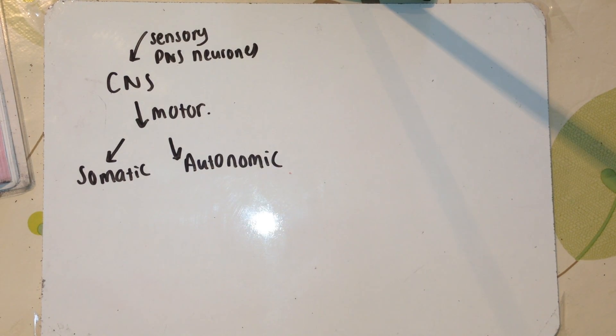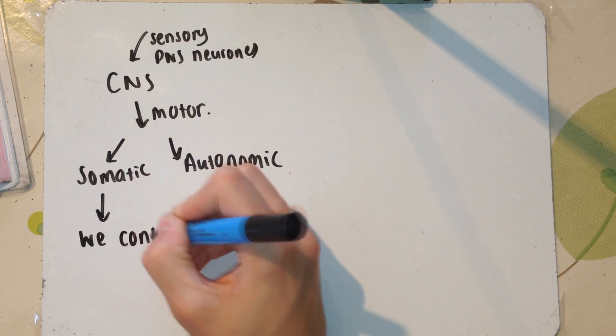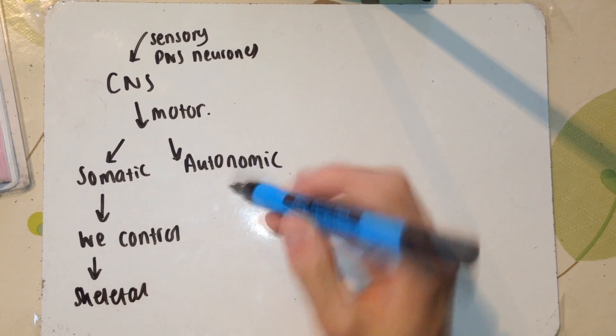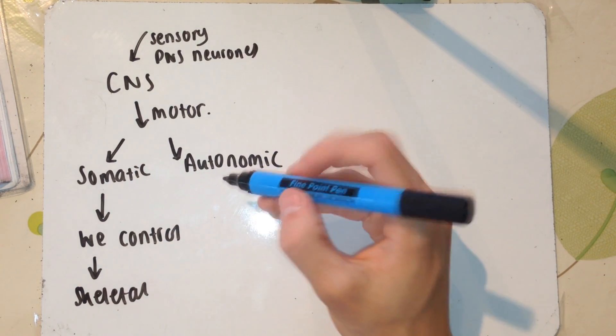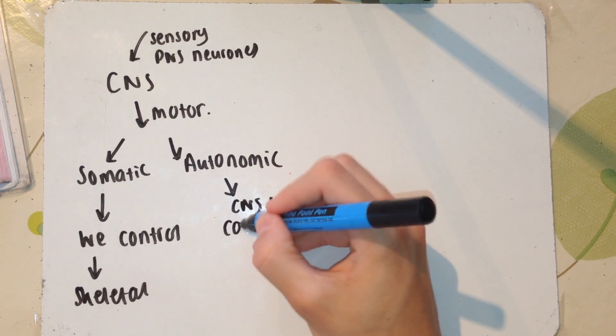The somatic motor neurons are ones that we control. These are our skeletal muscles, the muscles connected to our bones. We can move our arms; we're in voluntary control of these. The autonomic motor neurons from the CNS go to the cardiac and the smooth muscle.